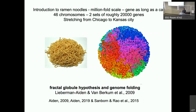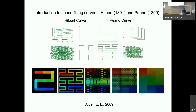In a very first meeting, Erez talked about ramen noodles. He explained that on a million-fold scale, the gene is the width of ramen noodles and as long as a car. He explained that the 46 chromosomes, two sets of roughly 20,000 genes, laid down would stretch from Chicago to Kansas City. Erez also introduced me to the concept of space-filling curves, especially focusing on the Hilbert curve on the left and the Peano curve on the right — from 1891 and 1890 respectively — to explain his hypothesis model for the genome globule. Aiden and his team had created 3D models using software programs to show how the 1D line becomes the 2D Hilbert curve and the Peano curves, and how the line could fold fractally in two and three dimensions to fit more of itself into the same space.